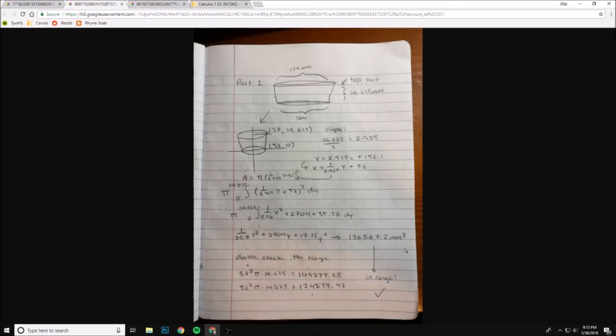We can also double check this by looking at the range of the numbers that are available. If we take the cylinder of just the top part and just the bottom part, we'll notice that the cylinder equation is really easy. It's just the base times the height. So 57 squared pi times this, 52 squared pi times this. And you'll notice that our number is in fact in our range of possible numbers, which means that our number is going to be pretty accurate.